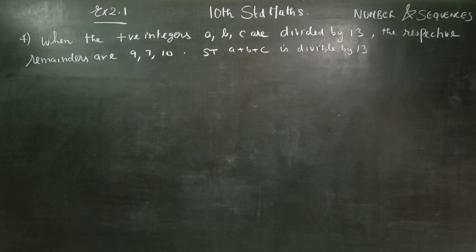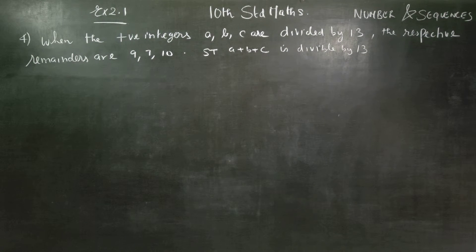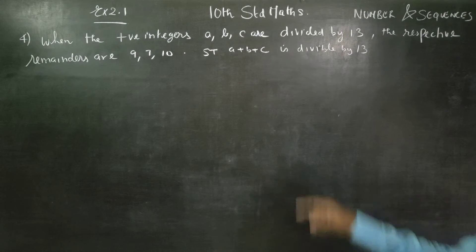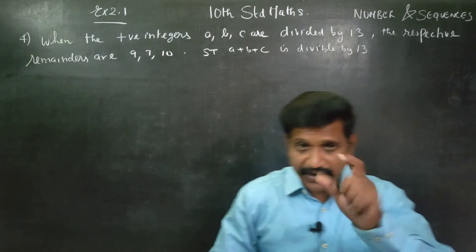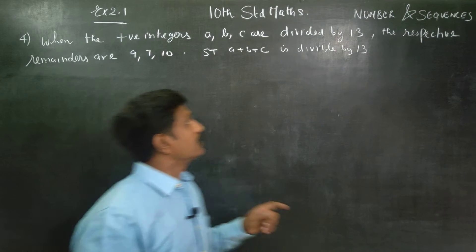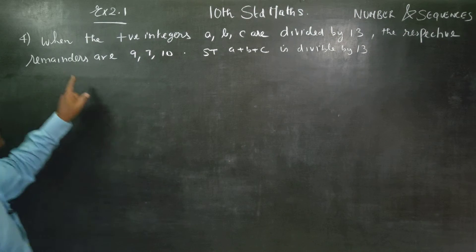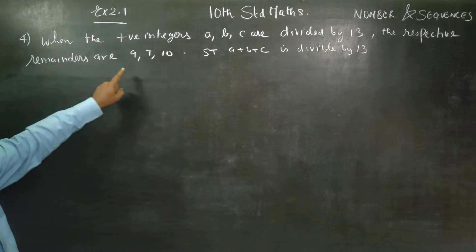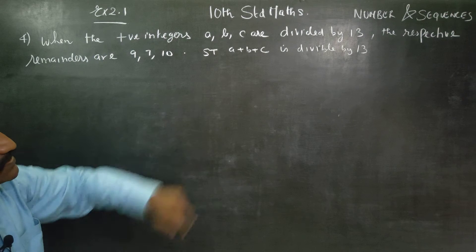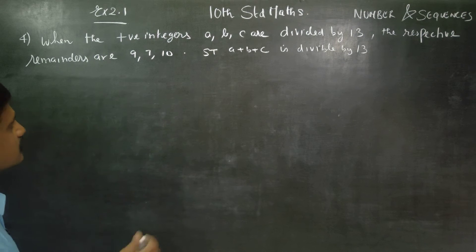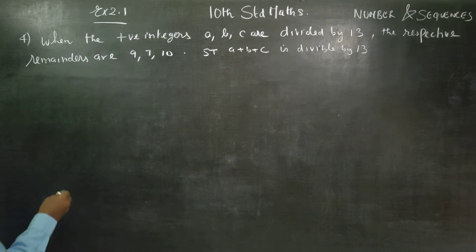Dear 10th standard students, I am Metro Karanagaran. In exercise number 2.1, when the positive integers A, B, C are divided by 13, we get the remainders 9, 7, and 10. Show that A plus B plus C is divisible by 13.